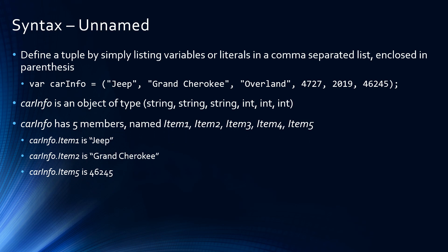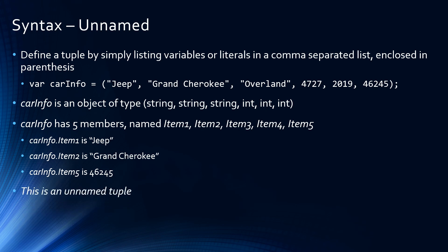In this case, string, string, string, int, int, int. So our carinfo variable has five fields: item1, item2, etc. through item5. This is an example of an unnamed tuple.